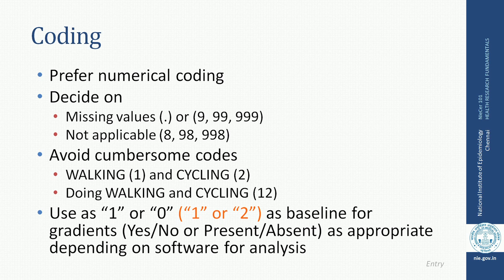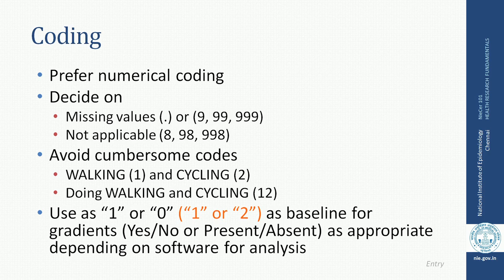Last but very important: most of the times we may be dealing with dichotomized variables, so you need to be very clear whether you are going to give 1 for yes and 0 for no, or 1 for yes and 2 for no, or 1 for present and 2 for absent as a baseline for all the gradients. Some softwares have a different understanding of 1 and 0 when it comes to analysis, so you need to be careful about your software-related details as well.